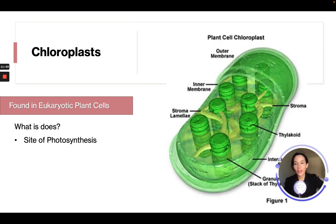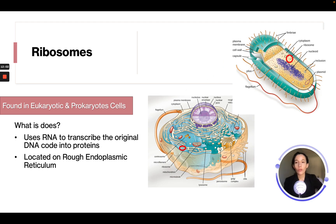Chloroplasts are found in eukaryotic plant cells specifically and are the site of photosynthesis. Ribosomes are found in both eukaryote and prokaryote cells. They use RNA to transcribe the original DNA code into proteins, and they are located on the rough endoplasmic reticulum.